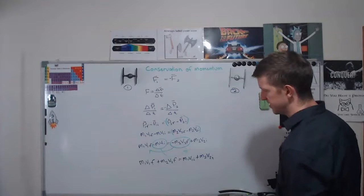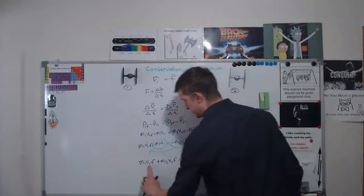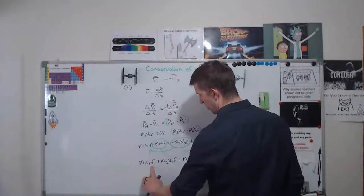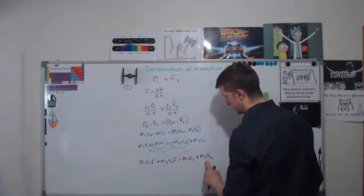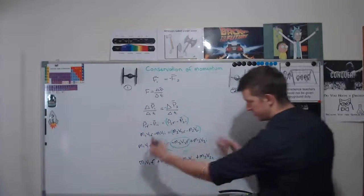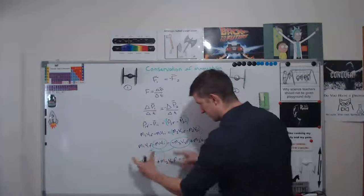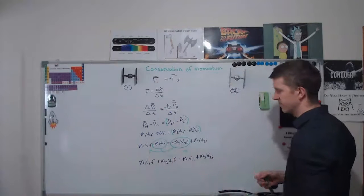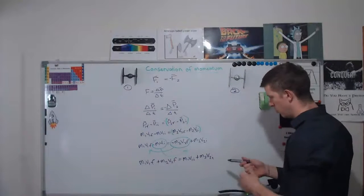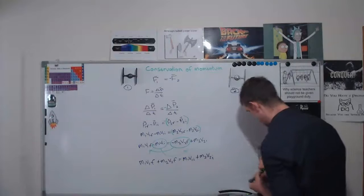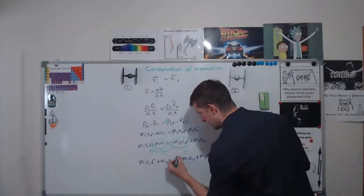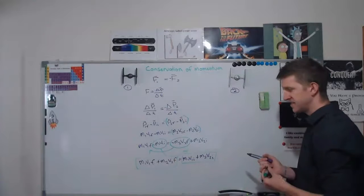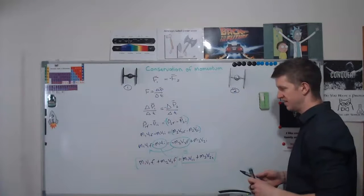And this is where it starts to look good because this is saying M1 V1 final plus M2 V2 final is equal to M1 V1 initial plus M2 V2 initial. I could put this earlier around and say the initial equals the final, like just by flipping left and right, but it doesn't really matter. But what I can see here is that this and this is the entire system before and after.